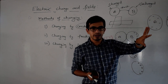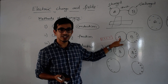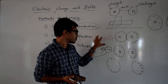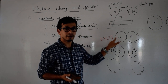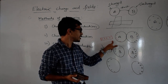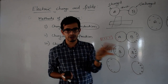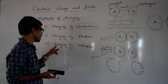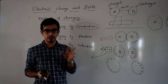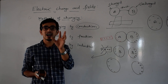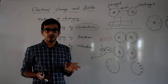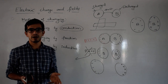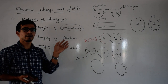So the uncharged object becomes charged, but we have not touched it to the charged object. Instead, what we have done is just brought the uncharged object near to the charged object. It is not required to touch it. That kind of method of charging is called induction. Charging by induction is the method of charging in which we bring the charged object near to the uncharged object but do not touch it, so that the uncharged object will be charged. That is called the method of induction.